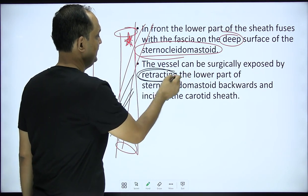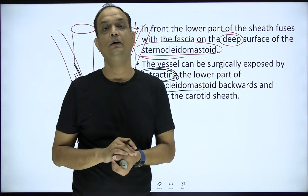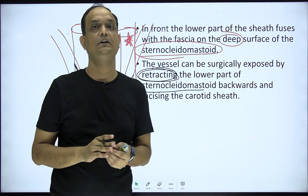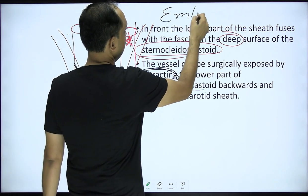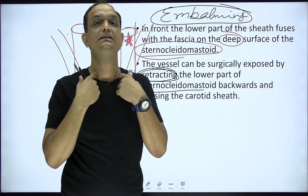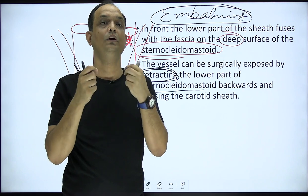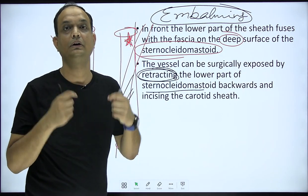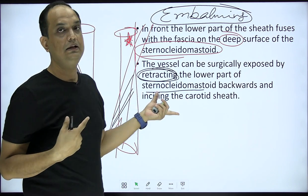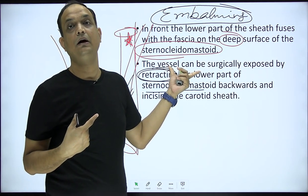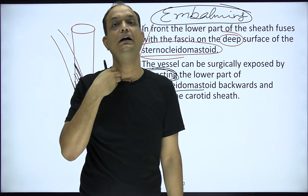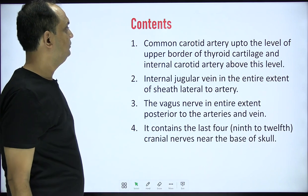In the lower part, anteriorly this sheath merges with the deep surface of the sternocleidomastoid. The vessels can be surgically exposed by retracting the lower part of sternocleidomastoid backward and opening or incising the carotid sheath. This is the common approach used during embalming: an incision is made in the lower part, the sternocleidomastoid is retracted, the sheath is opened, and the common carotid artery is accessed.